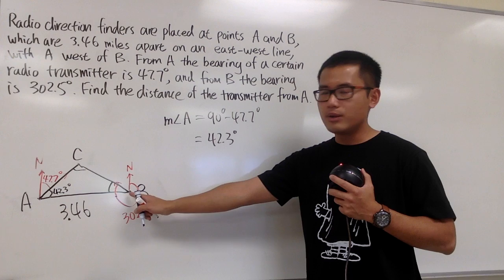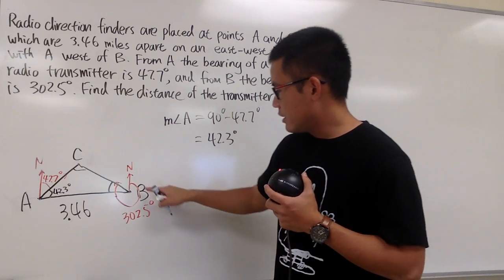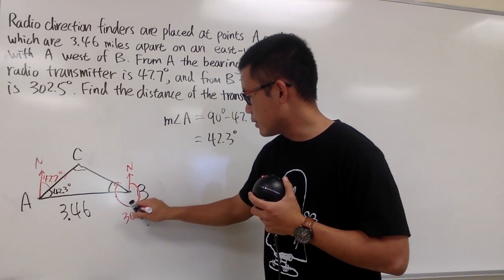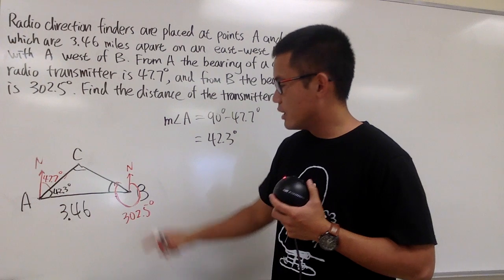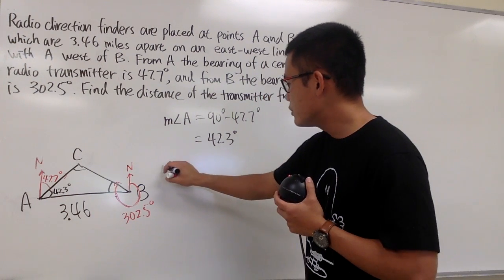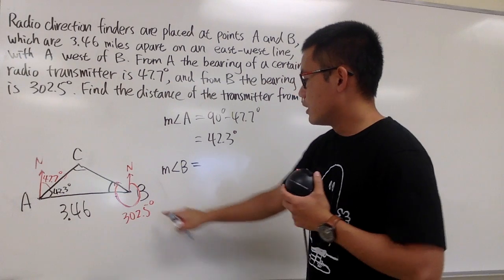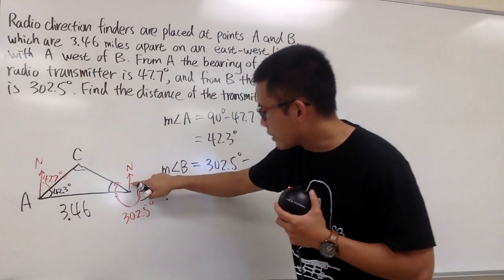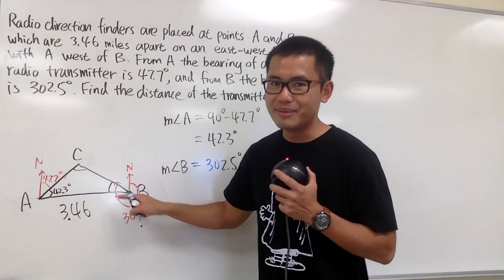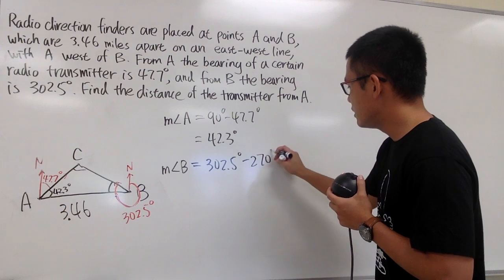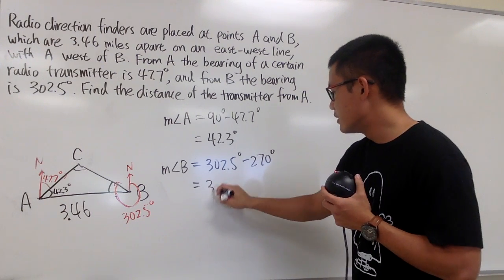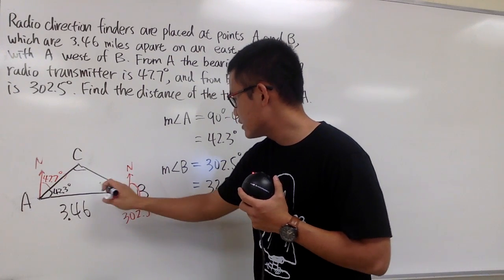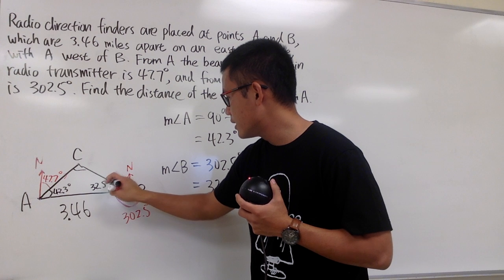Now let's find angle B. The full clockwise rotation to reach the transmitter direction from B was 302.5 degrees. We already know that going to the west direction is 270 degrees. So we subtract: 302.5 minus 270 degrees gives us 32.5 degrees. That is the interior angle at B inside the triangle, so angle B equals 32.5 degrees.